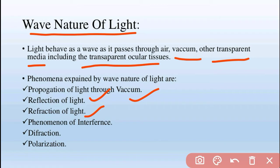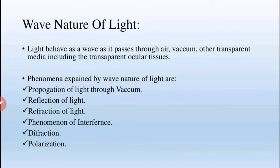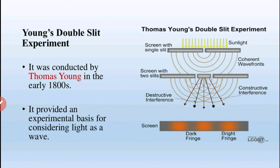Polarization is a very important property of light, which shows that light is a transverse wave. We will discuss polarization in detail in the next video. To show the wave nature of light, Young's double slit experiment is a way to demonstrate wave behavior.